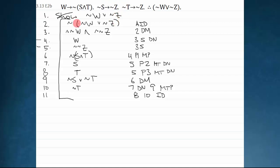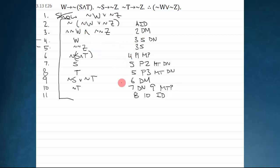This example only used DeMorgan's — it didn't make use of the other negation rules — but it's nice and simple and shows you how you can just attack a problem with all the derived rules. You don't need to worry about all sorts of other things; it's just a nice, easy shortcut into getting right at the derivation.